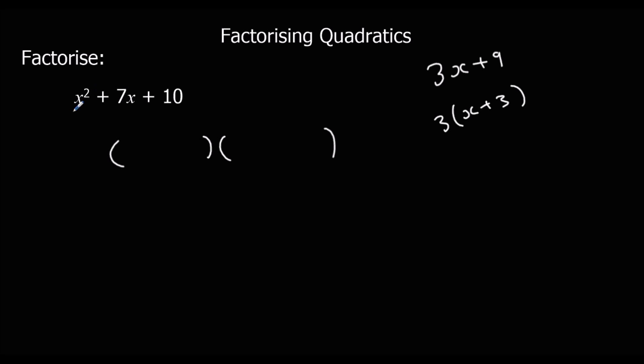So this first term is made by multiplying the first two numbers together. x times x makes x squared, so x goes in each bracket.